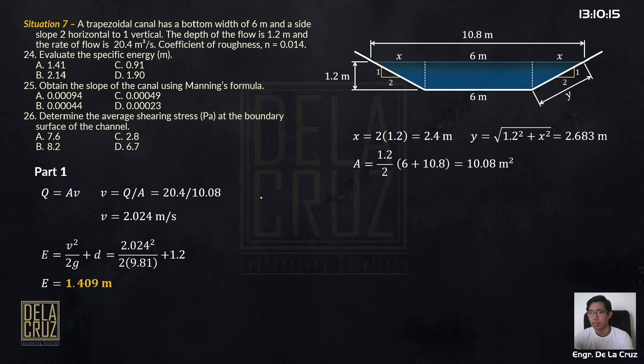Obtain the slope of the canal using Manning's formula. This is the formula. The velocity using Manning's formula is 1 over n, R raised to 2 thirds, and S raised to 1 half. So you need to familiarize this one. This appears repeatedly on board exams. It's usually formula-based.